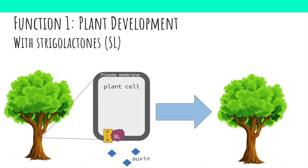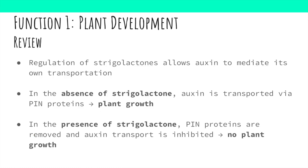This diagram shows the function of strigolactone in plant development. When strigolactones are present, transport proteins are removed, preventing the flow of auxin into the cell — this prevents plant growth and development. As a review: auxin, which promotes cell elongation and plant growth, mediates its own transportation by regulating the synthesis of strigolactones, which decrease the flow of auxin by depleting its transport channels. When strigolactone is absent, auxin travels through cell membranes via PINs allowing plant development; when strigolactones are present, PIN proteins are removed and auxin transport is inhibited, resulting in inhibition of plant growth.